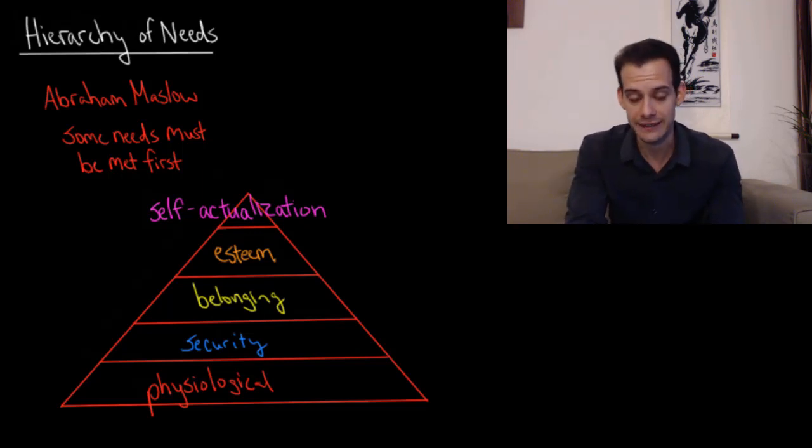This is often illustrated in textbooks with a diagram like what I've drawn here, a triangle or pyramid with five segments to it. The idea is that you start at the base of the pyramid and you meet those needs, that category of needs, and then you move up to the next category in the hierarchy until eventually you reach the top of the pyramid.